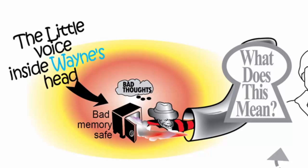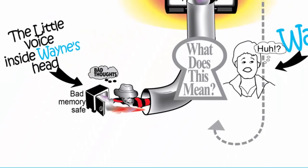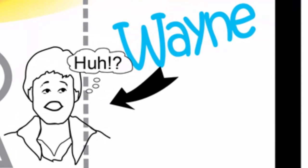That little voice inside Wayne's head grabs a memory from his past and connects that old memory to a current event. The little voice inside his head tells Wayne's amygdala that the event means something bad. When that happens, the amygdala shuts down Wayne's brain so he doesn't know what's happening to him.